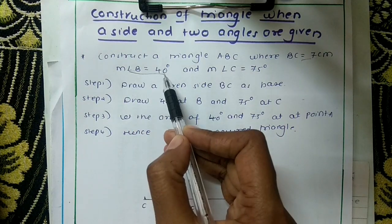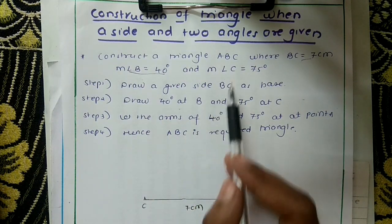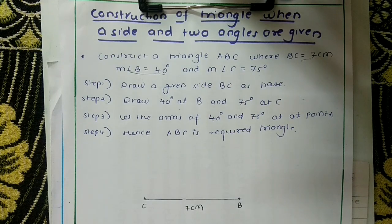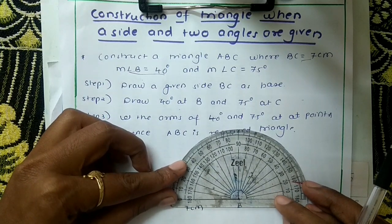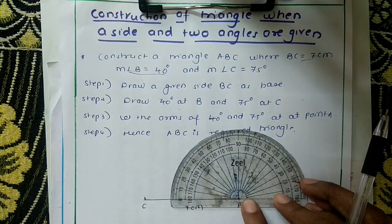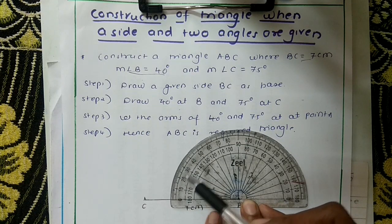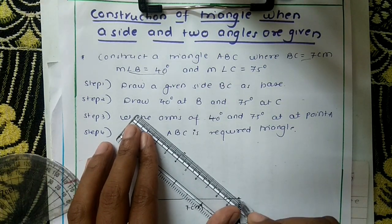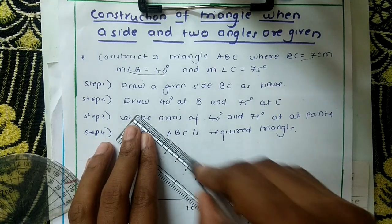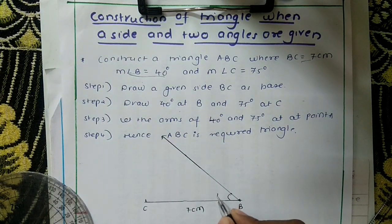Next, draw 40 degrees at B. Using a protractor, you have to draw these angles. As I shown in previous video, keep the protractor with the outside 0 on the side. Consider the outside scale: 0, 10, 20, 30, 40. So B is 40 degrees. Join these two points and extend this arm to any extent. Next, this 40 degrees is over.